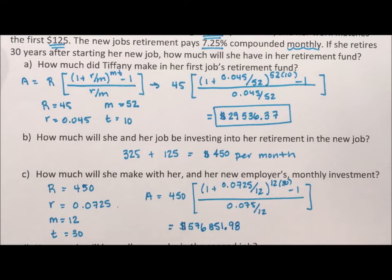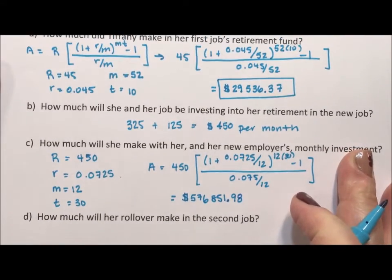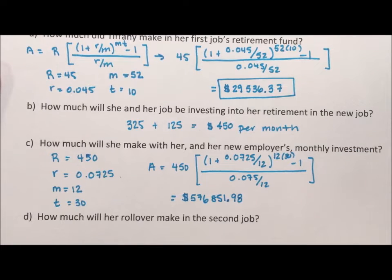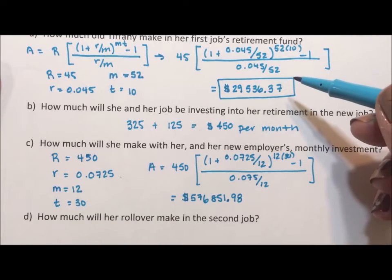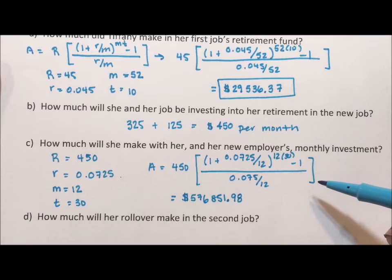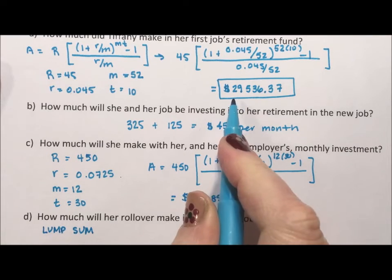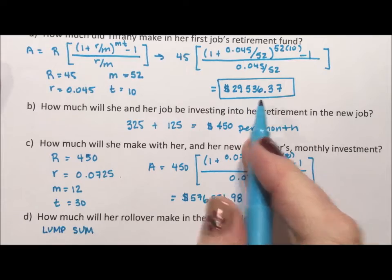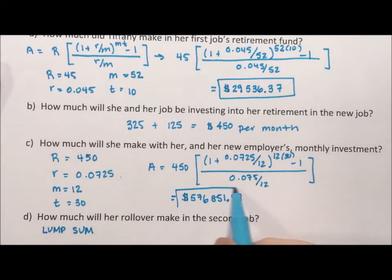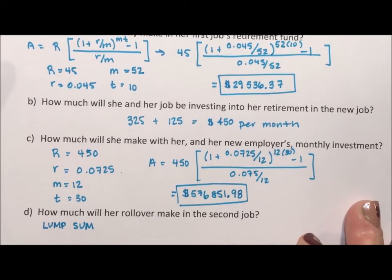Then we want to figure out her rollover, because we want to find out how much money she has at retirement. This is the annuity that she has, but she's gonna roll over this $29,000. So this was an annuity because she was putting $45 away each week. This is an annuity because she's putting $450 away each month. This rollover is not an annuity, this rollover is a lump sum. One and done - she is putting this $29,536.37 into the account and letting it sit for 30 years. She's adding to it, but this part of it is just sitting for those 30 years. It is a lump sum.